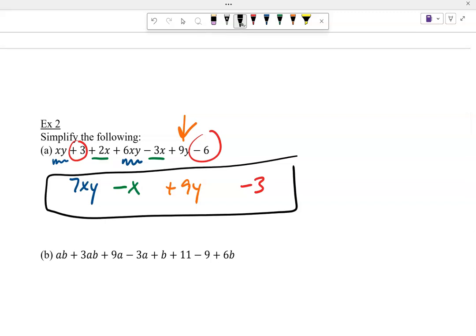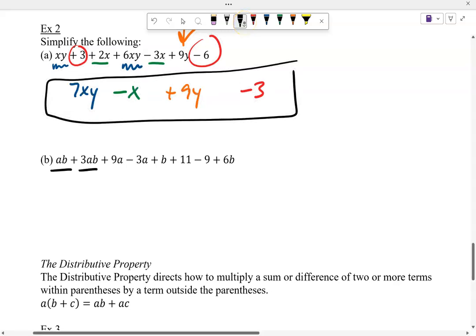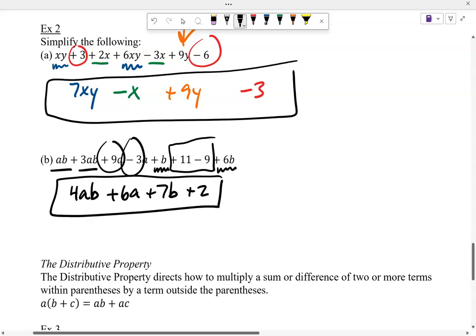Let's go ahead and do that next one there. I've got ab plus 3ab. There's some like terms right away. 1ab. 4ab. And then I got a 9a minus 3a. 9 minus 3 is a 6a. And I've got a plus a b. So 1b plus 6b. And I guess at the end, all I have is these two constants at the end. 11 minus 9. 2. And there it is for that one.